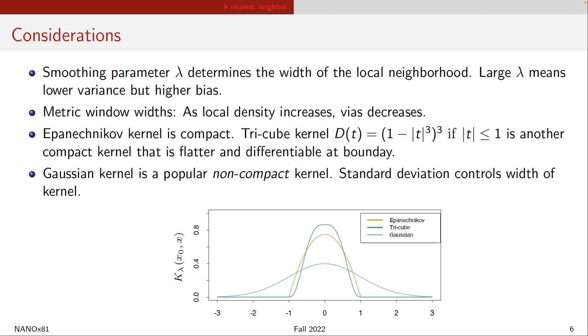No matter which smoothing method you use, there's always one parameter lambda that determines the width of the neighborhood. If you have a huge lambda, you are taking the weighted average of a much wider area. If you choose a very small lambda, you are taking the weighted average of a very small area.